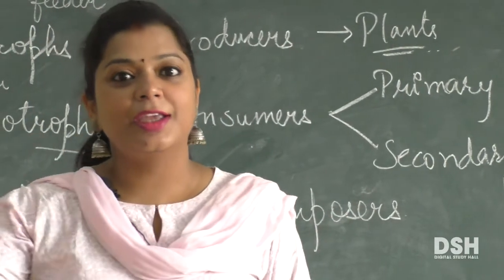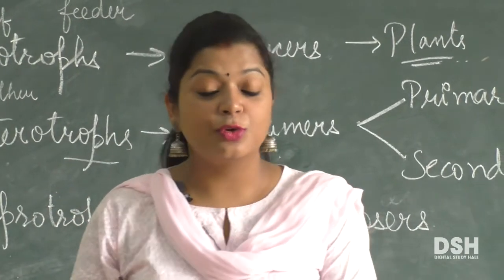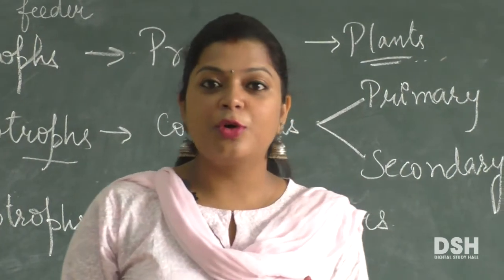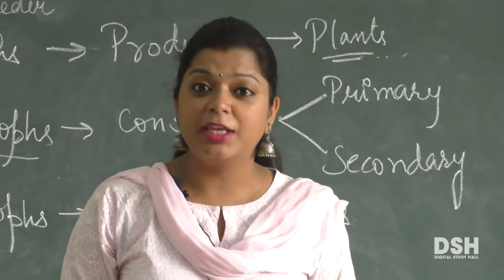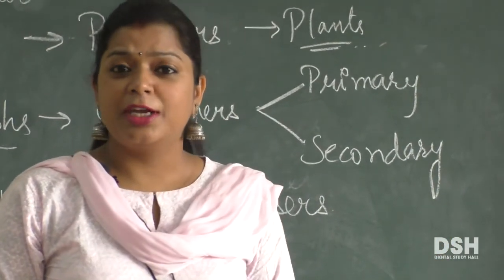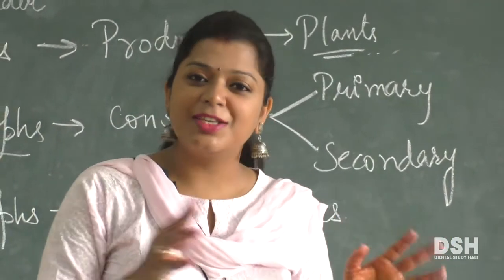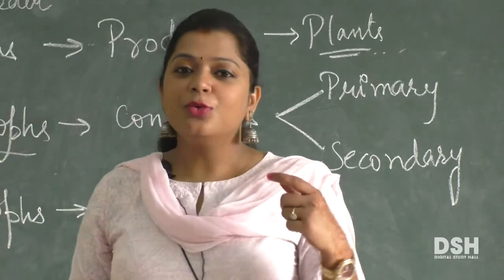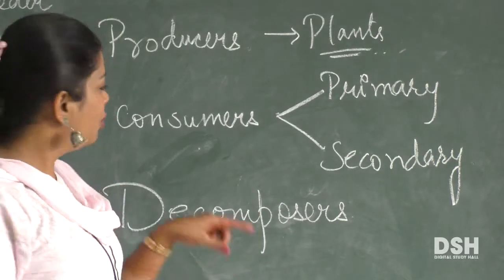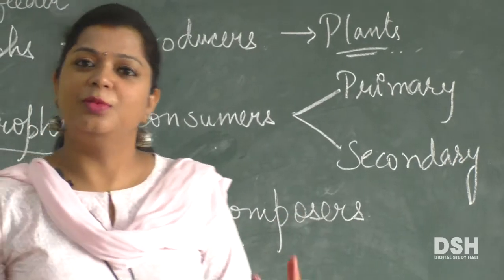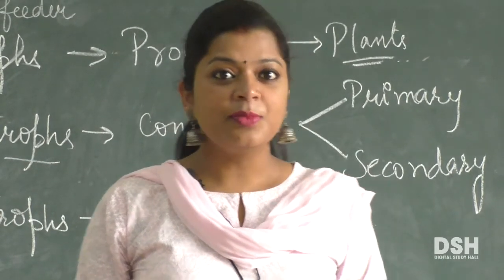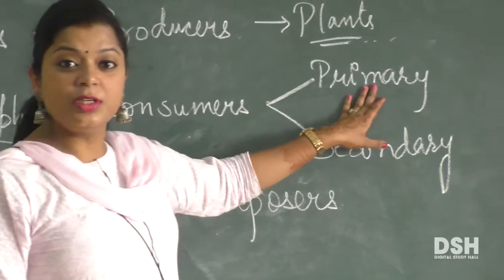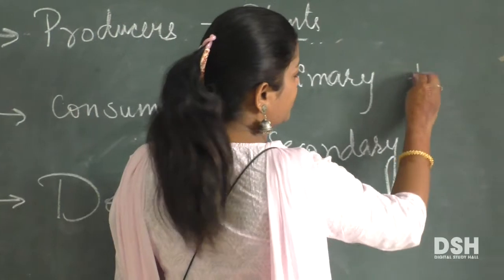The food which is made by the plants — using sunlight, roots, minerals, and water absorbed by plants, and made using carbon dioxide — we consume these plants. So heterotrophs are called consumers. There are two types of consumers: one is primary consumers, which are herbivores.